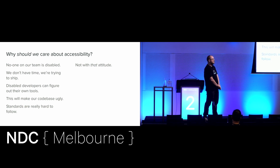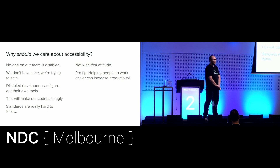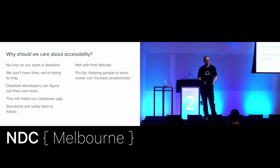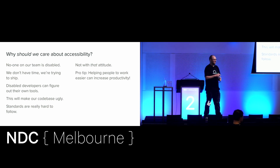Let's answer these excuses. Nobody on our team is disabled - and they won't be with that attitude. You're just going to be cutting out developers who might be excellent, and they can't access your tools. If you do hire them, their life is going to be terrible. They'll get burned out, they'll leave and find somewhere else that gives a shit. A pro tip: if you put effort into making your software easy to interact with, it makes people more productive.